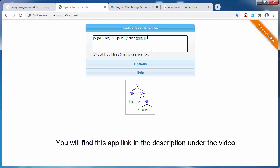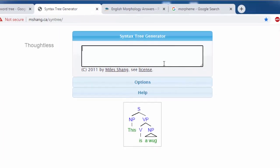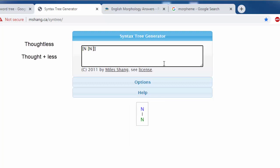Let's take the word 'thoughtless'. It is a noun that can be divided into morphemes. The first morpheme is a noun, 'thought'. The second morpheme is the derivational affix 'less'. Here we have our tree.